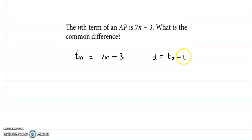That is t2 minus t1. So we find t1 and t2, that is first and second term. So t1 will be 7 into 1 minus 3, so 7 minus 3 equals 4. And second term t2 will be 7 into 2